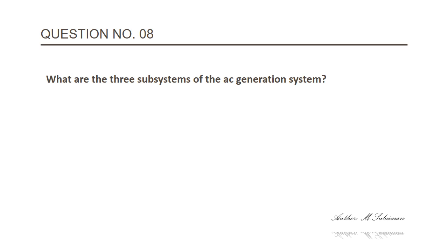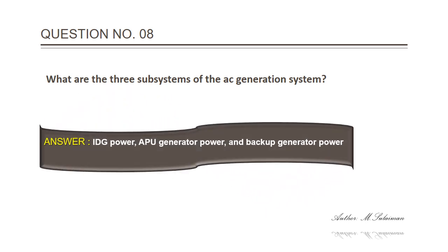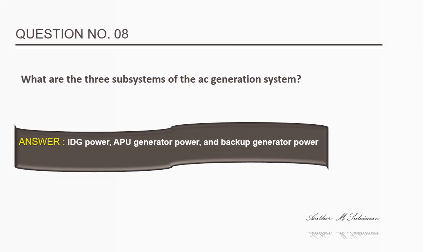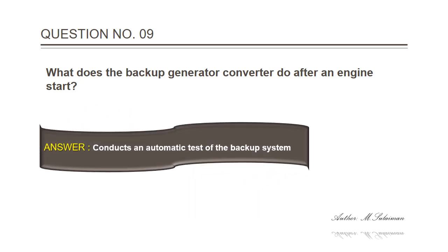Question 8: What are the three subsystems of the AC generation system on aircraft 777? Question 9: What does the backup generator converter do after an engine start? Answer: It conducts an automatic test of the backup system.